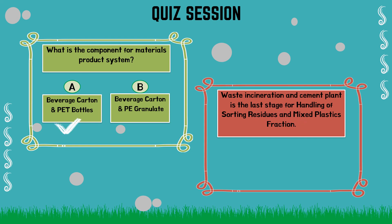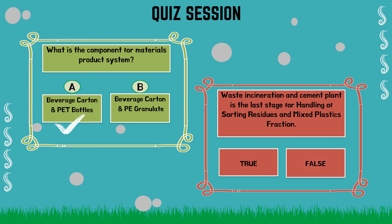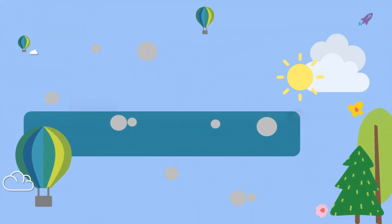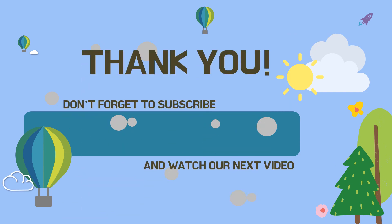True or false? Waste incineration and cement plant is the last stage for handling of sorting residues and mixed plastics fraction. The answer is true. Thank you for watching. Don't forget to subscribe and watch our next video.